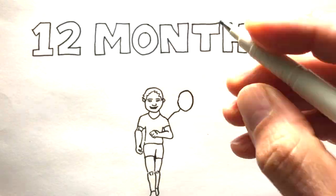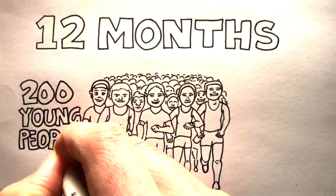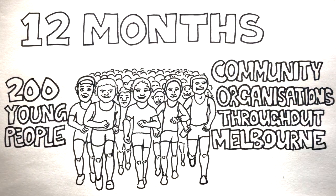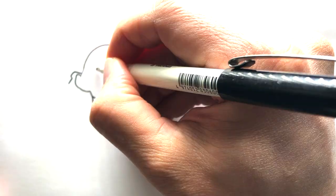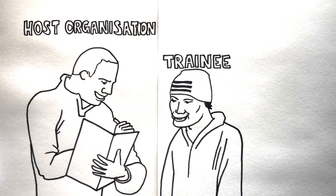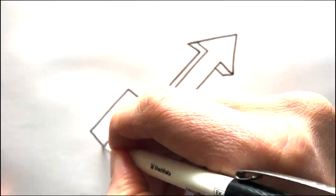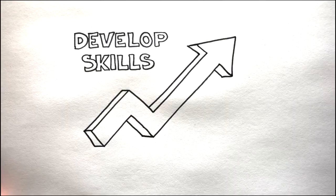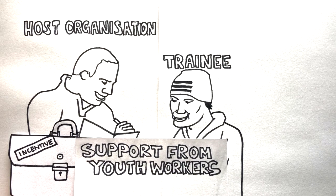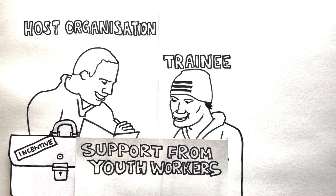The program will run for 12 months and aims to match 200 young people with community organisations throughout Melbourne who want to give a young person an opportunity. Organisations are matched with a trainee and given incentives to help with wages and supervising the young people while they develop their skills and expertise. And they also get support from a team of youth coaches and trainers to ensure the traineeship is a success.